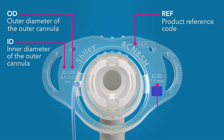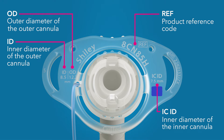The inner diameter measurement of the inner cannula appears on the right side of the flange, and the cuffed or uncuffed designation is etched on the bottom of the flange.